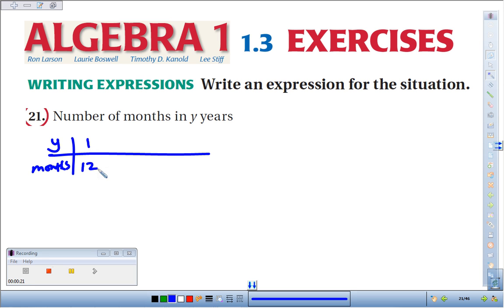Well, in one year we know there's 12 months, and two years would be double that, there'd be 24 months, and three years would be triple that, there'd be 36 months.